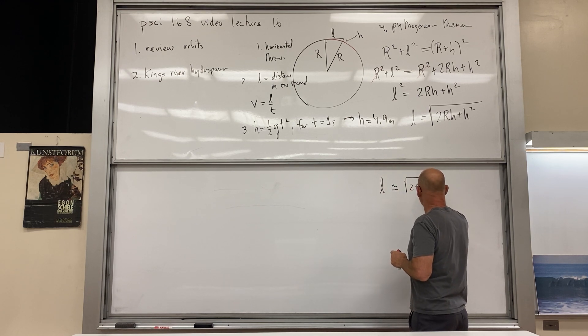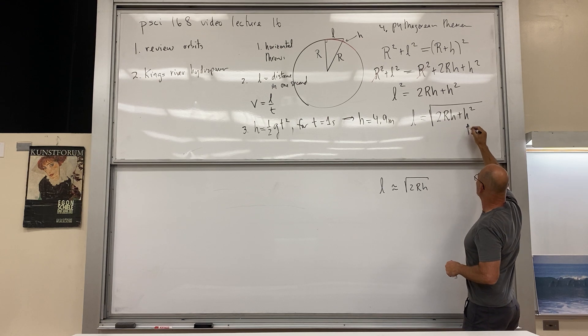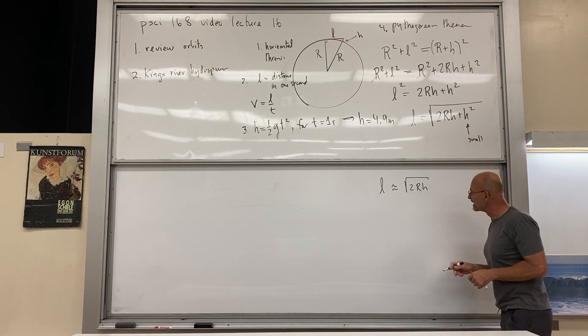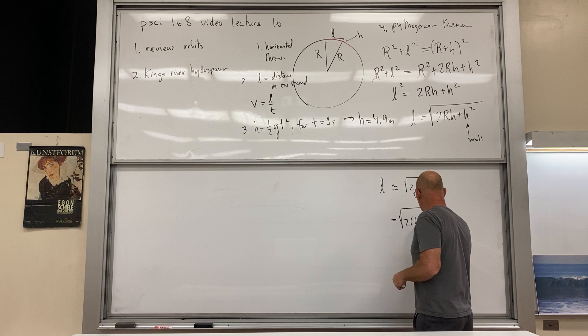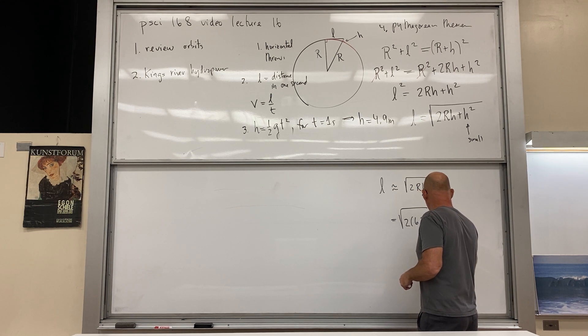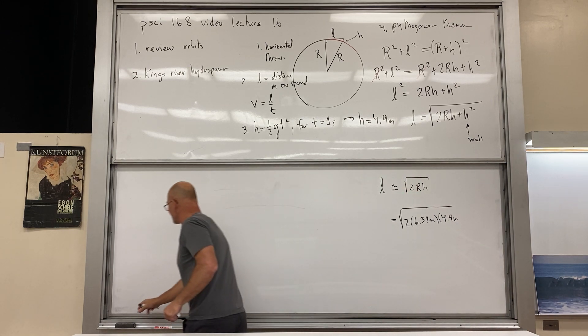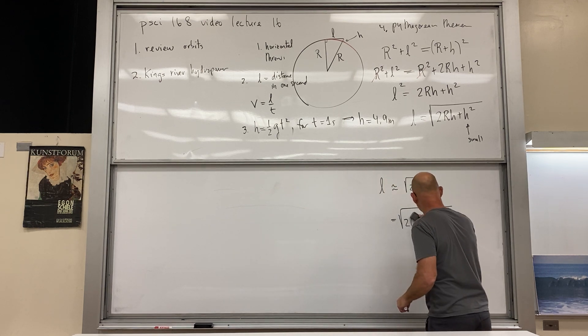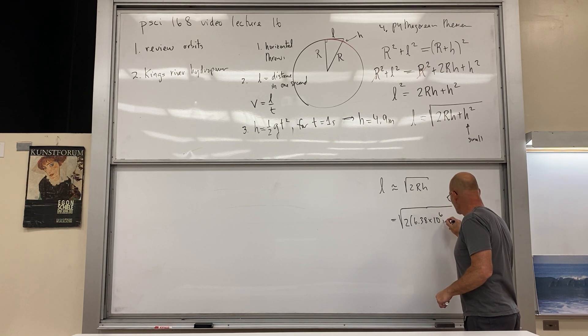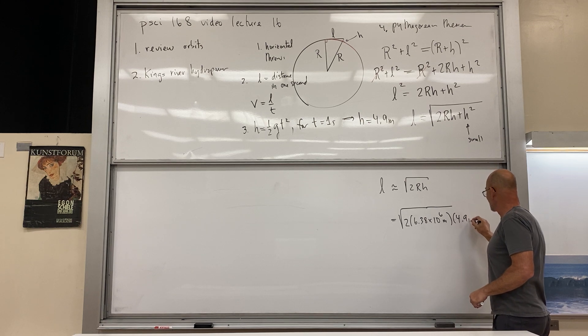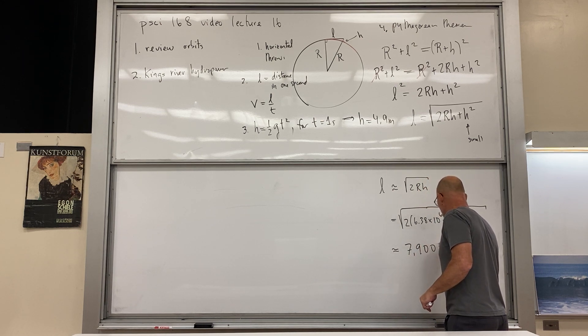And we're just going to call it an approximation: 2 times r times h. And it's at this point that we plug our numbers in, okay? Because, so I'm just going to write this is very small so we can neglect it, we can ignore it. And now we're going to have the square root of 2 times 6.38 meters—not so fast, not so fast. I just missed a factor of a million. Okay, what's more, 2 times 6.38 times 10 to the 6 meters and 4.9 meters.